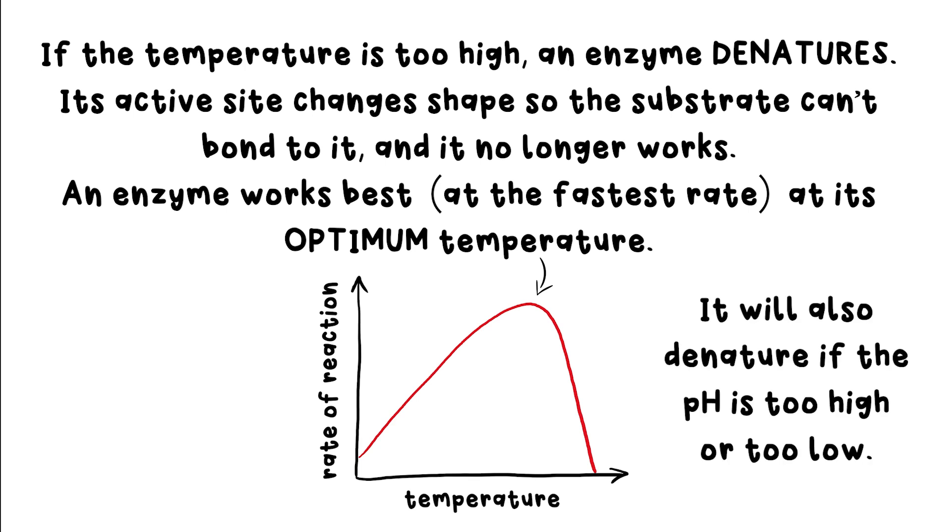The same goes for pH too, though. If an enzyme is in too acidic or too alkaline conditions, then it denatures. Amylase has an optimum pH of 7, which is neutral, which makes sense if it's found in our mouths. But pepsin has an optimum pH of 2.5. Where do you think you'd find that in your body?